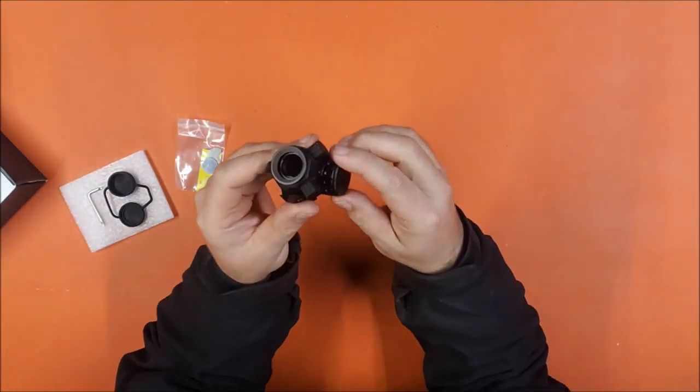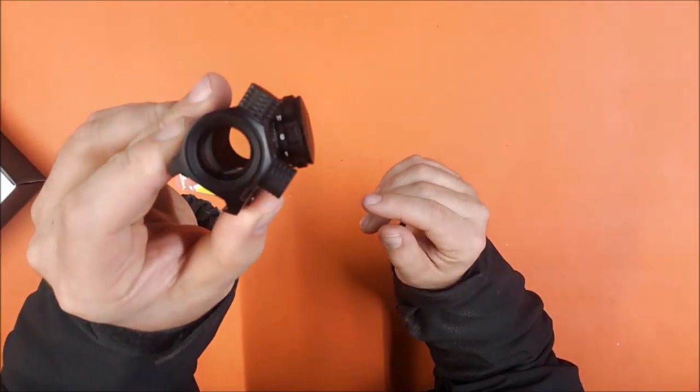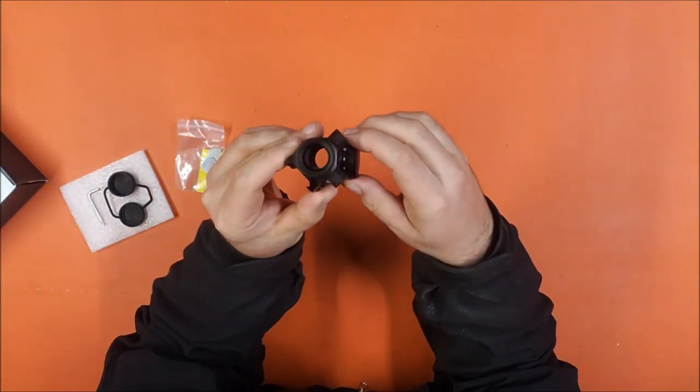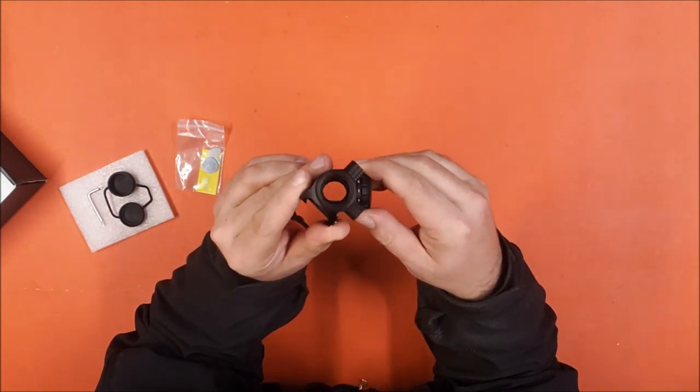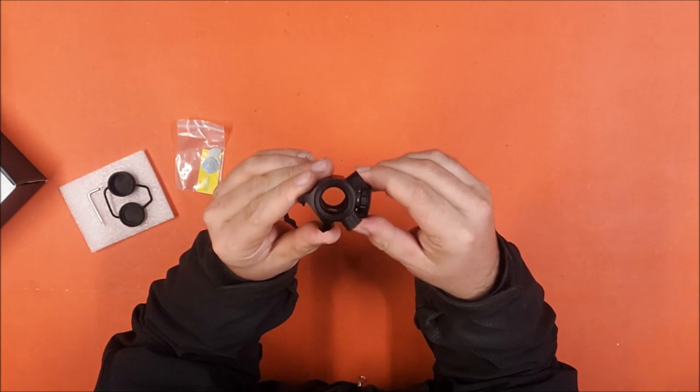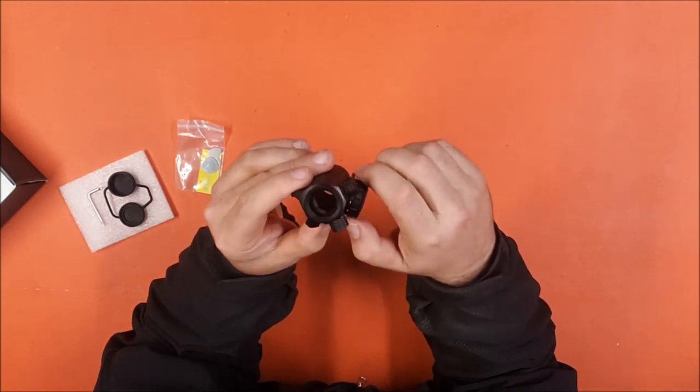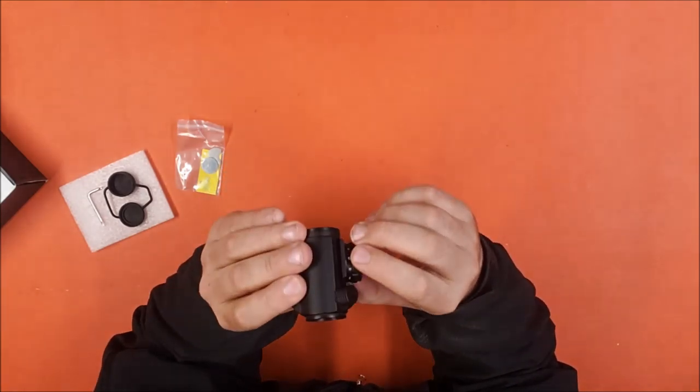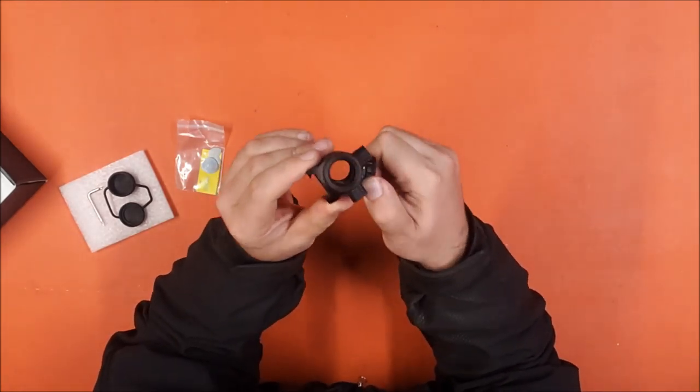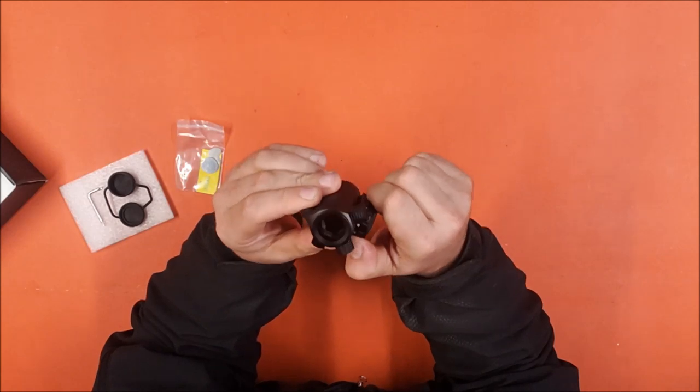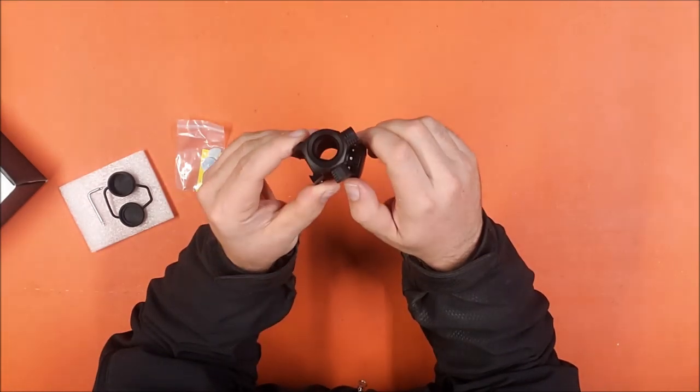It then has multiple settings that you are adjusted using this dial. Zero is off. Rather than having different kinds of reticle, they're all just a single red pinpoint. But you can increase how bright the pinpoint is to make it easier to see.